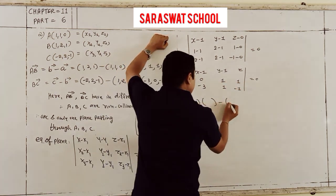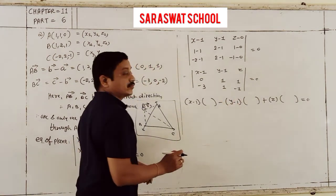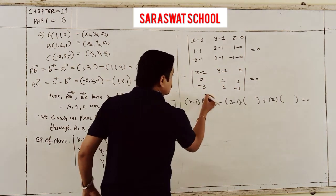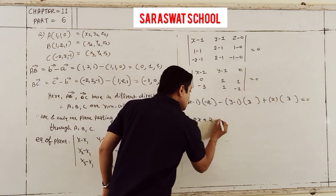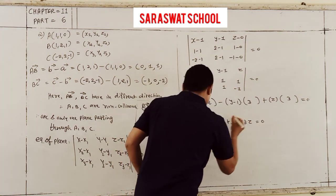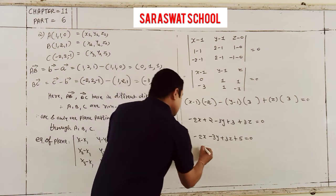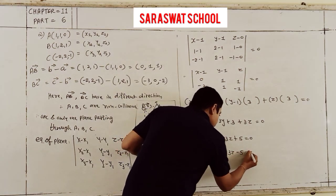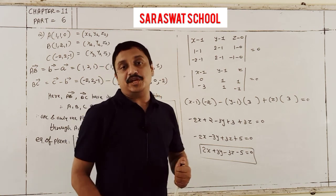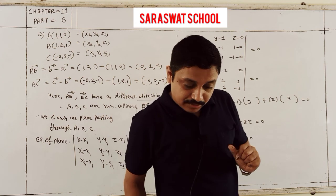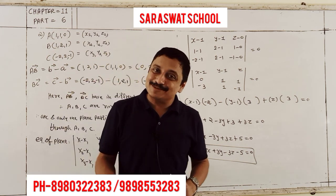Expanding the determinant: x minus1 gives minus2, coefficient of y gives minus3, and coefficient of z gives 3. So the equation becomes minus2x plus 2 minus 3y plus 3 plus 3z equals 0, giving 2x plus 3y minus 3z minus 5 equals 0, or 2x plus 3y minus 3z equals 5. That is the Cartesian equation of the plane. This ends question 6 and I will stop this video here.